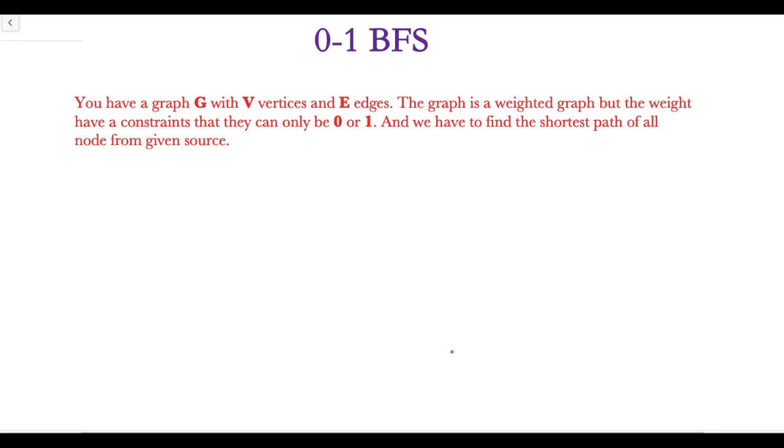you have given a graph G with V vertices and E edges. The graph is a weighted graph but the weight have a constraint that they can only be 0 or 1. And we have to find the shortest path of all nodes from a given source.